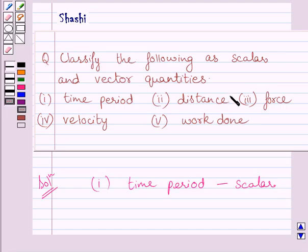Now quantity given to us in second part is distance. Now we know distance has magnitude but no direction. So it is a scalar quantity.